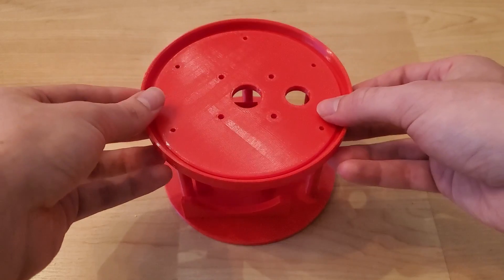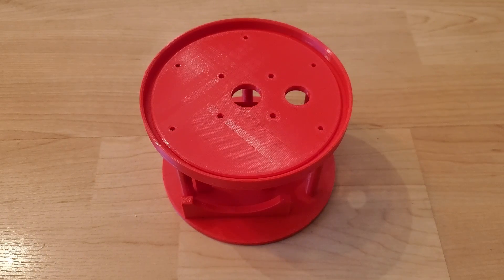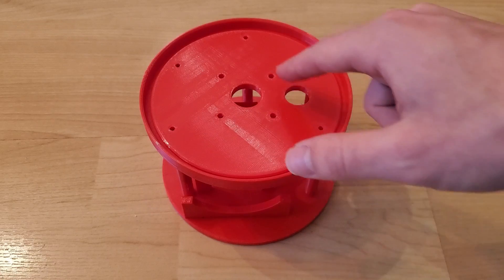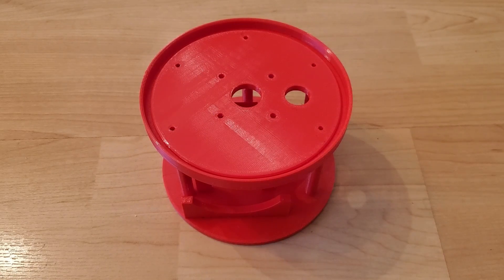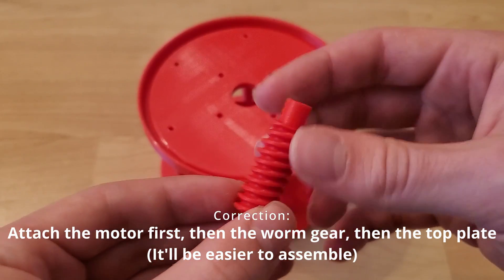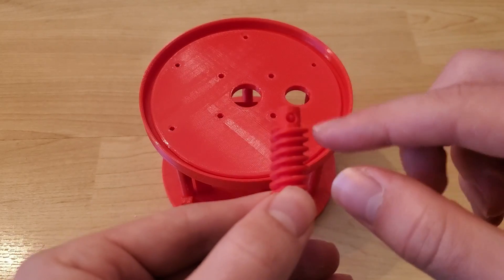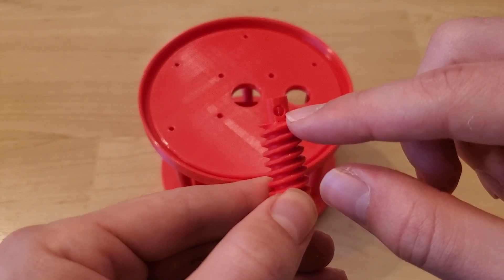The top plate then goes on top and it's secured by these five screws. Motor can also be screwed in here. Wiring can go out through the side. And finally the worm drive can be attached to the motor and secured through this screw hole here.